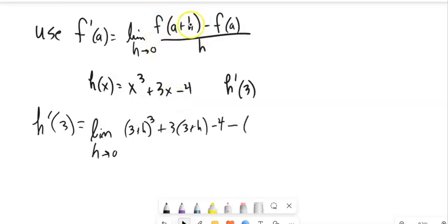That'll be minus just the function itself without the wiggle when 3 is plugged into it. So 3 cubed plus 3 times 3 minus 4. And that whole thing is over h.